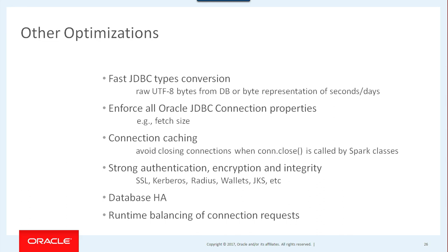Type conversion is important because we're going from SQL types to Java types via JDBC, and then from Java types to Spark types — that's a double conversion. To avoid that, in the driver we've provisioned a mechanism where we can go straight from SQL types to Spark types without the intermediate conversion. We can provide raw bytes — for example, the byte representation of date, time, and so on.